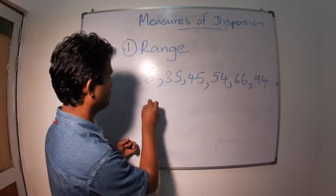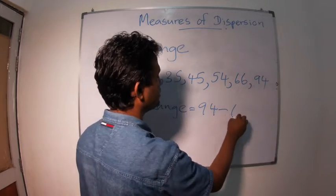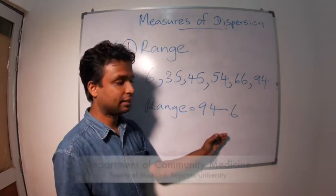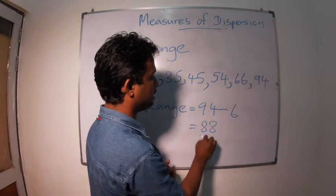So, what is range? Range is 94 minus 6. You subtract the smallest value from the largest value equals 88.